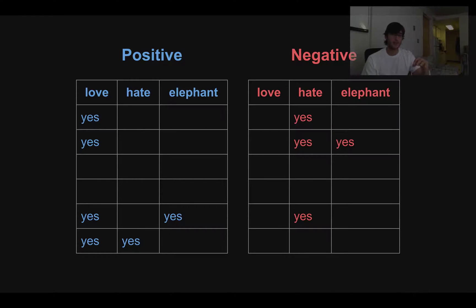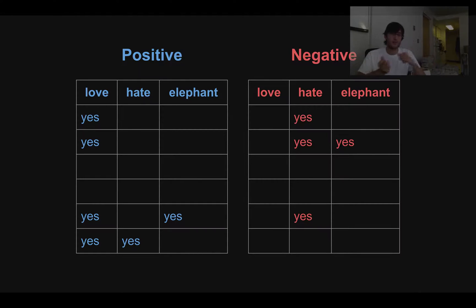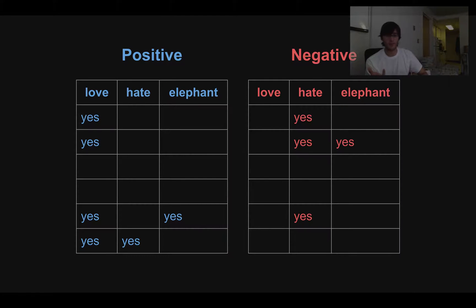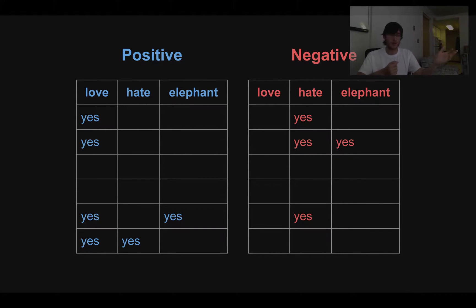The last two positive sentences said 'love.' One of them also said 'hate' — maybe a love-hate relationship — and one said 'elephant.' And if you look at the negative examples, three of the negatives use the word 'hate.' So based on these statistics, if we only know whether the sentence used 'love,' 'hate,' or 'elephant,' how would we decide for a new sentence whether it's positive or negative?